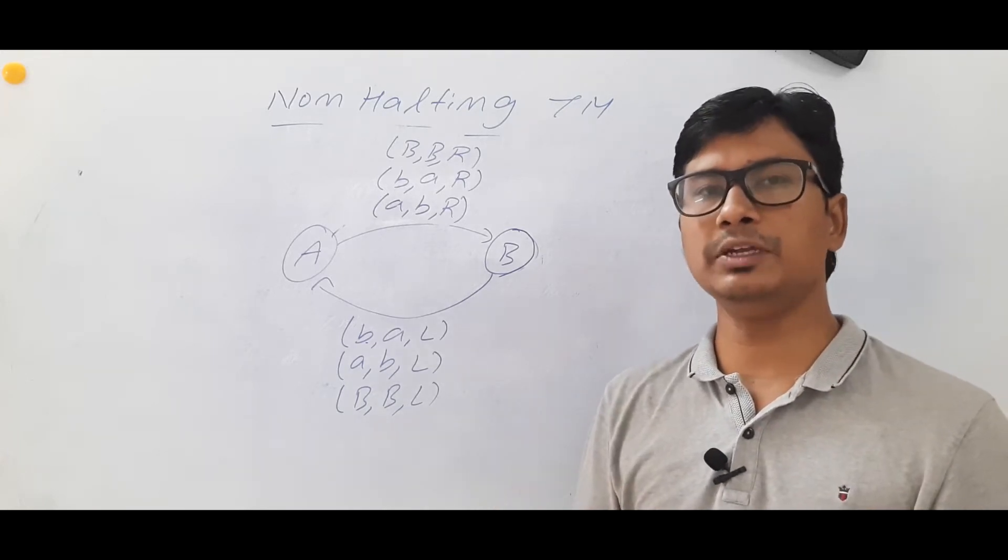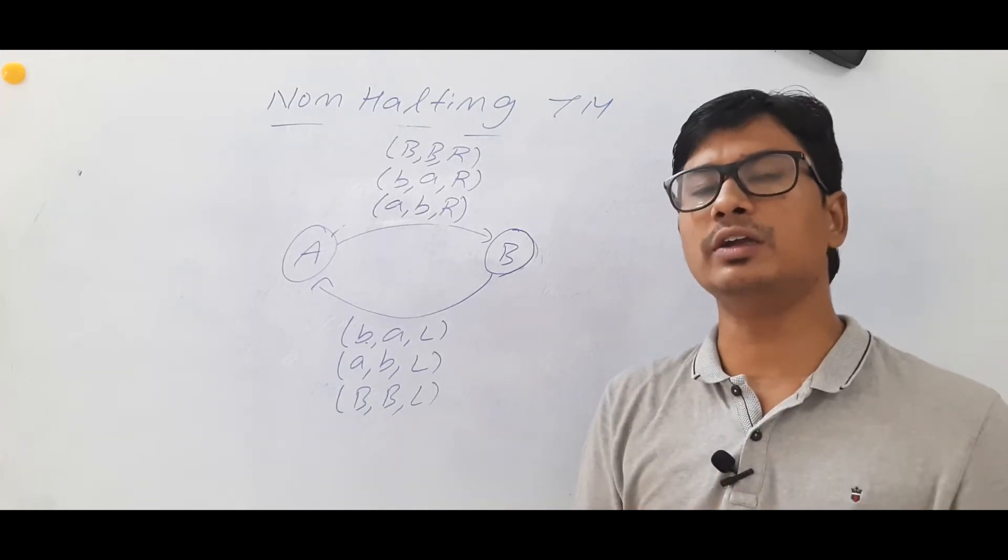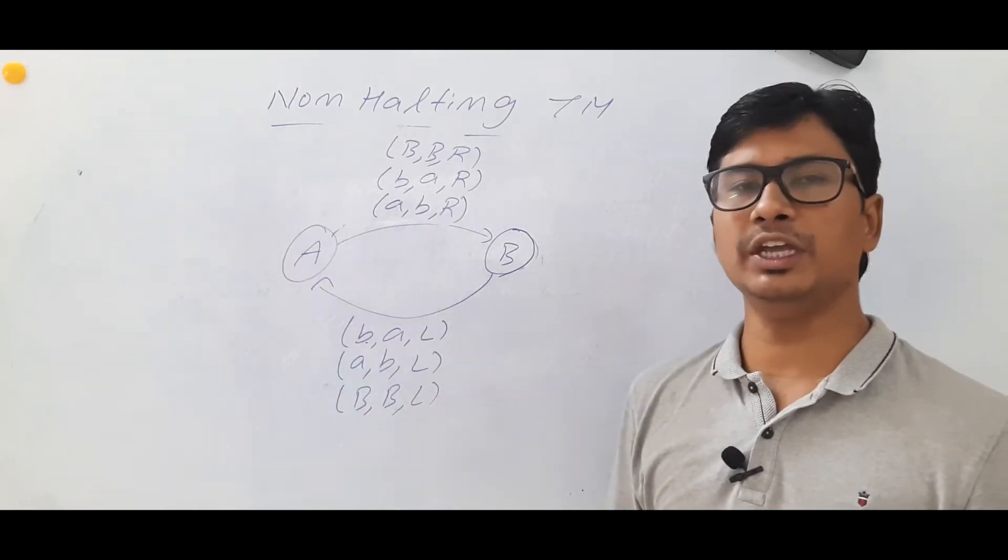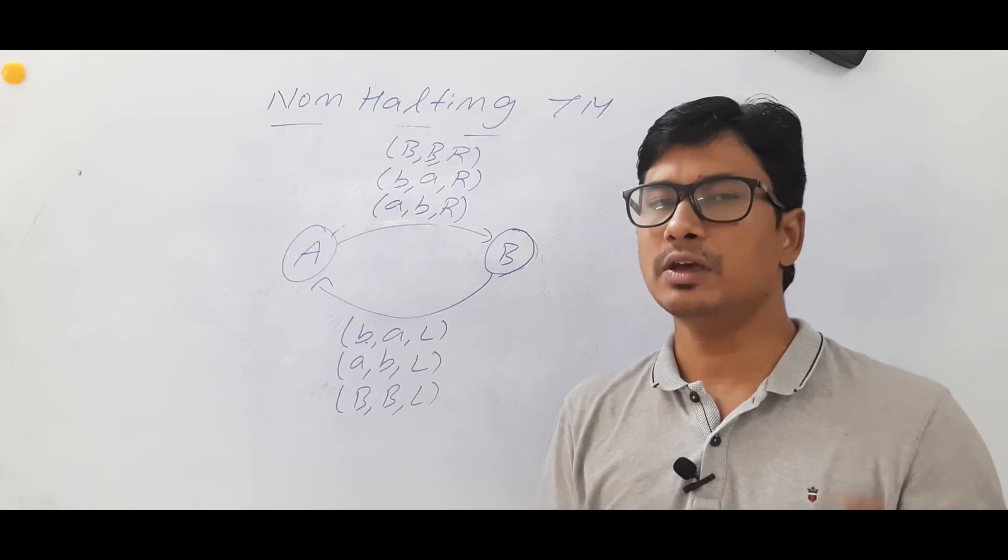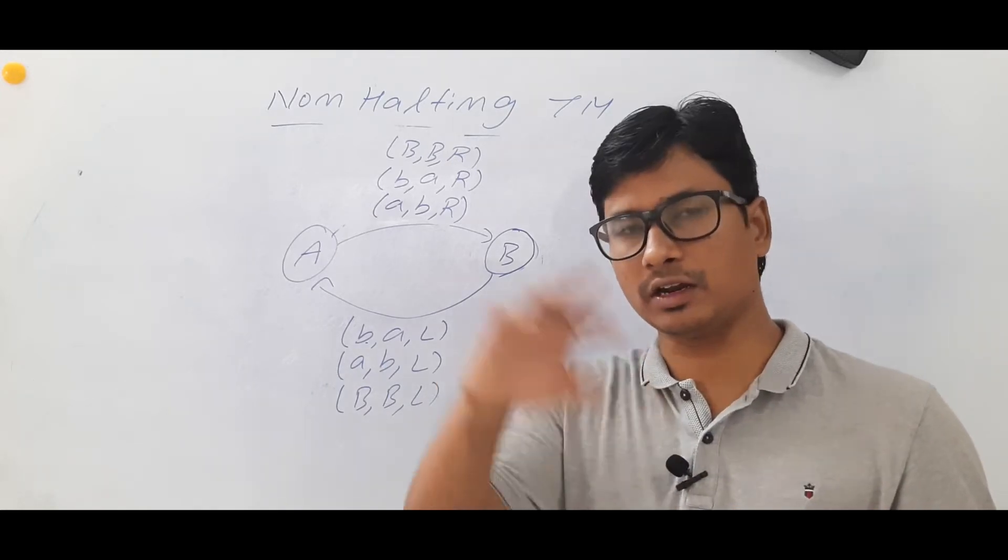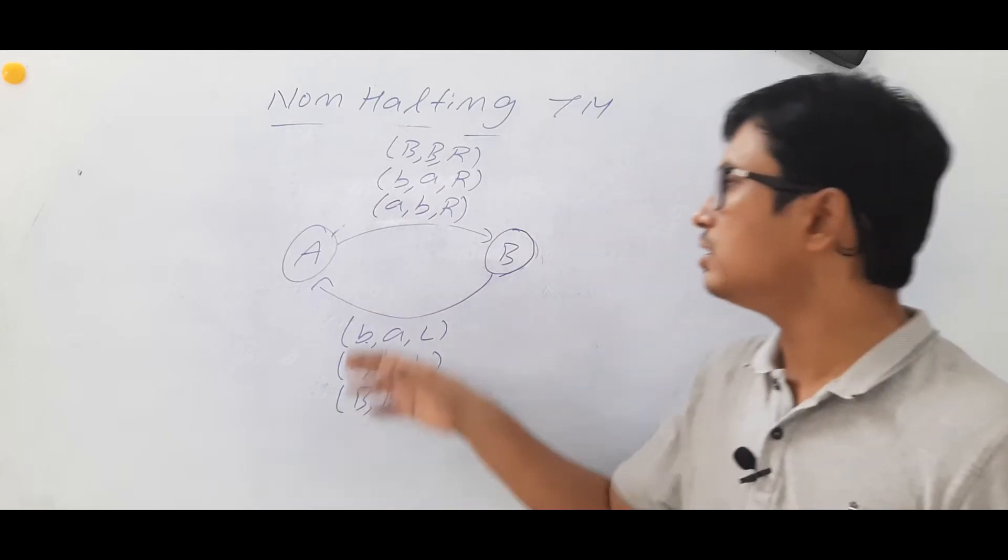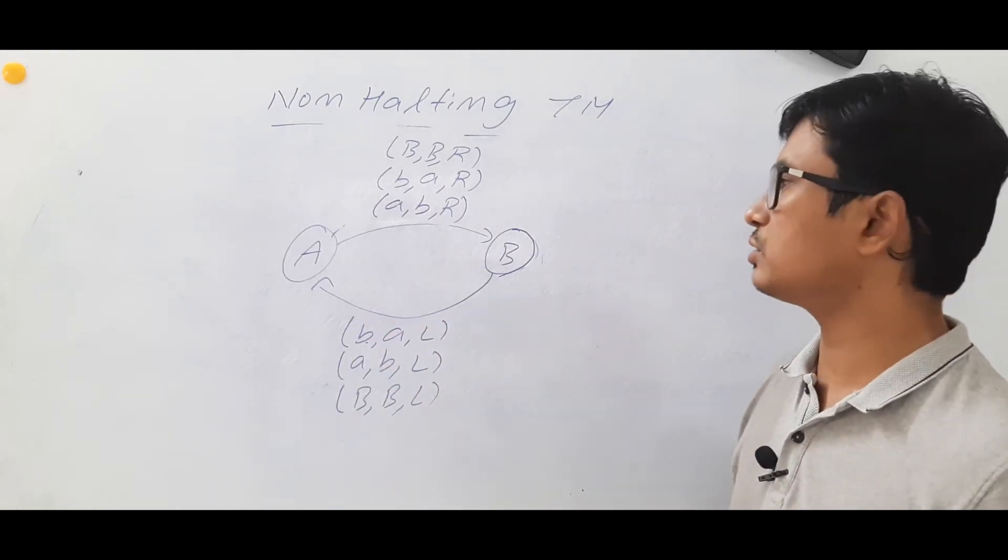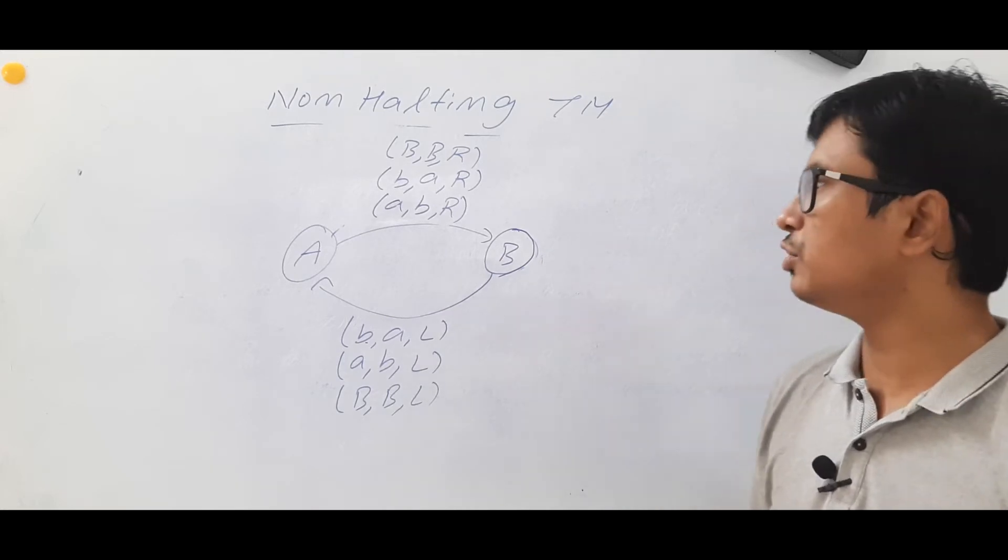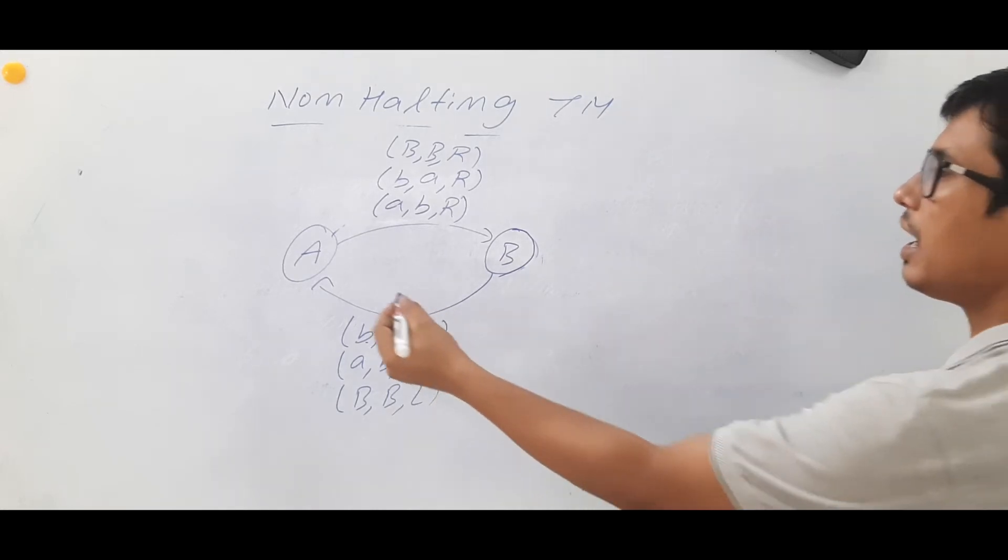Halting means stop, so non-halting means it is not stopping—it is going into a loop. Even when writing C programs, we will find loops where we go into infinite loops. There is no stopping condition. Here also we will face a non-halting problem in the Turing machine.